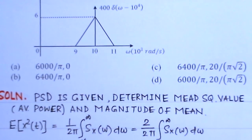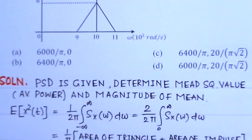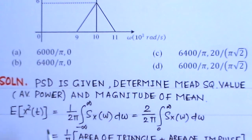First we will find the mean square power. E[X²(t)] = (1/2π)∫_{-∞}^{∞} S_X(ω) dω. We take integration from 0 to infinity, so this becomes (2/2π)∫ S_X(ω) dω.